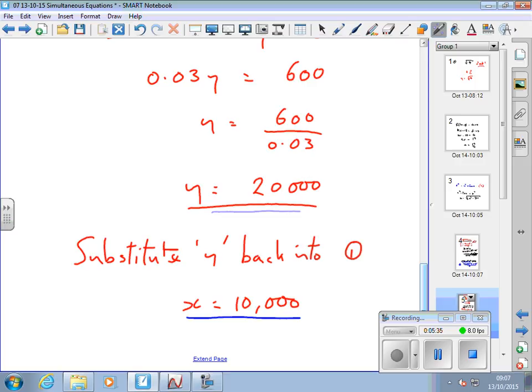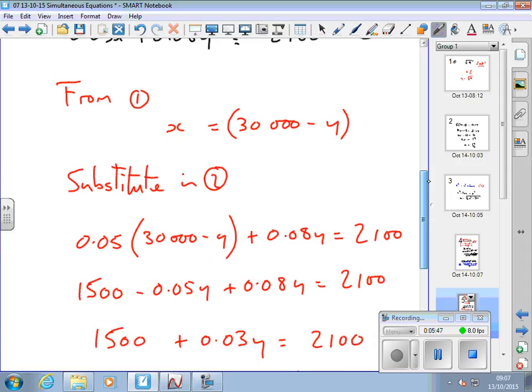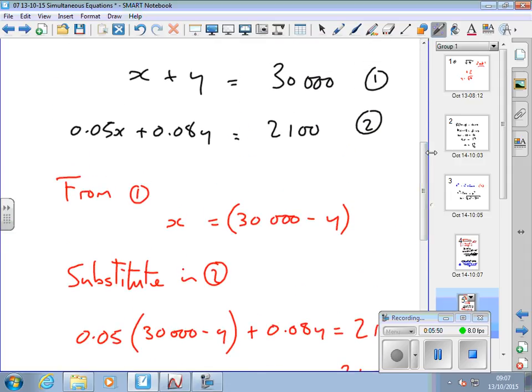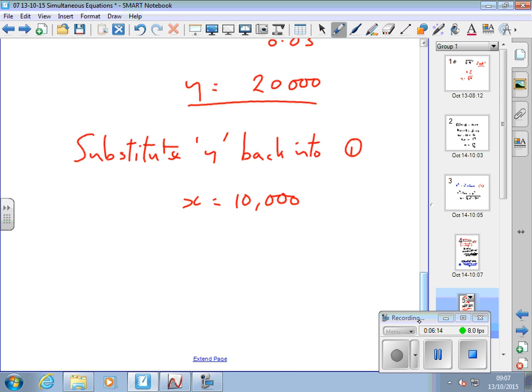There's one more thing I'd like to do. If I was an engineer and this was a problem and I had to be sure the answer was right, what might you do now? Use the other one and do what? Check it, yeah, check. Put your values for X and Y back into the second equation. We now know what X and Y is. So is 5% of X plus 8% of Y, 2100? Check. And then if you're right, you'll know you're right.